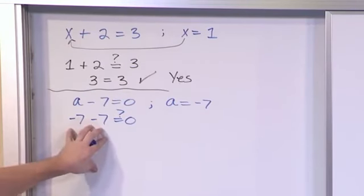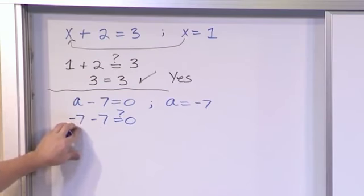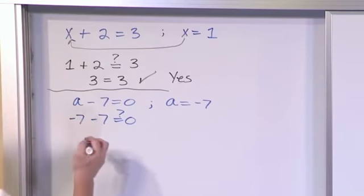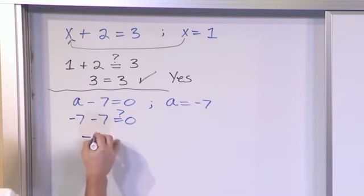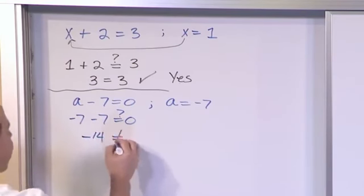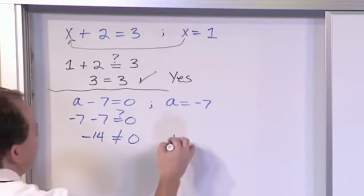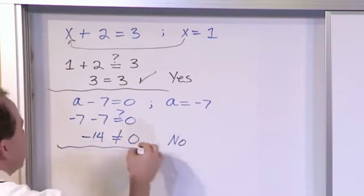Well, if we go back to adding and subtracting numbers, we're already starting with a negative 7, and we're subtracting 7 more. So based on what we've done in previous lessons, you should realize that this is negative 14. And this is definitely not equal to 0. So no, this is not the solution to the equation.